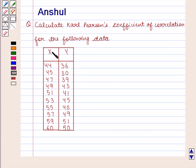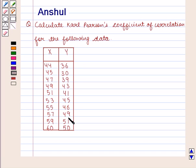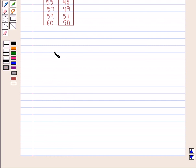The X series is given as 44, 45, 47, 49, 51, 53, 55, 57, 59, 60 and the Y series is given as 36, 30, 39, 43, 41, 45, 46, 49, 51, 50. We know that Karl Pearson's coefficient of correlation is denoted by rho of x, y or r.